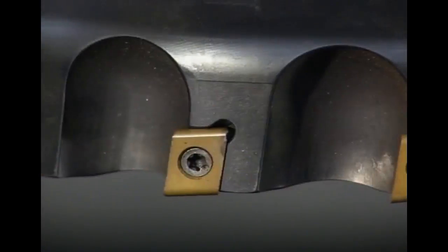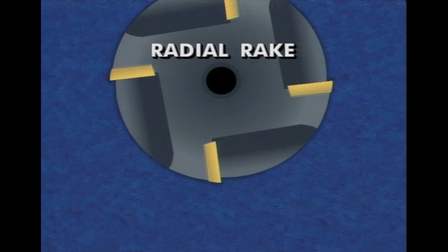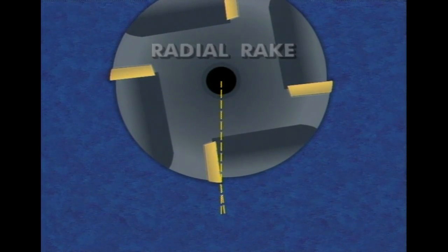Rake angles in milling cutters are determined by the cutter body and by the insert. Two rake angles, the radial rake and the axial rake, are determined by the position of the insert pockets in the cutter body. The radial rake is the angle measured between the insert face and a radial line drawn from the cutter axis to the cutting edge, hence the name radial rake.